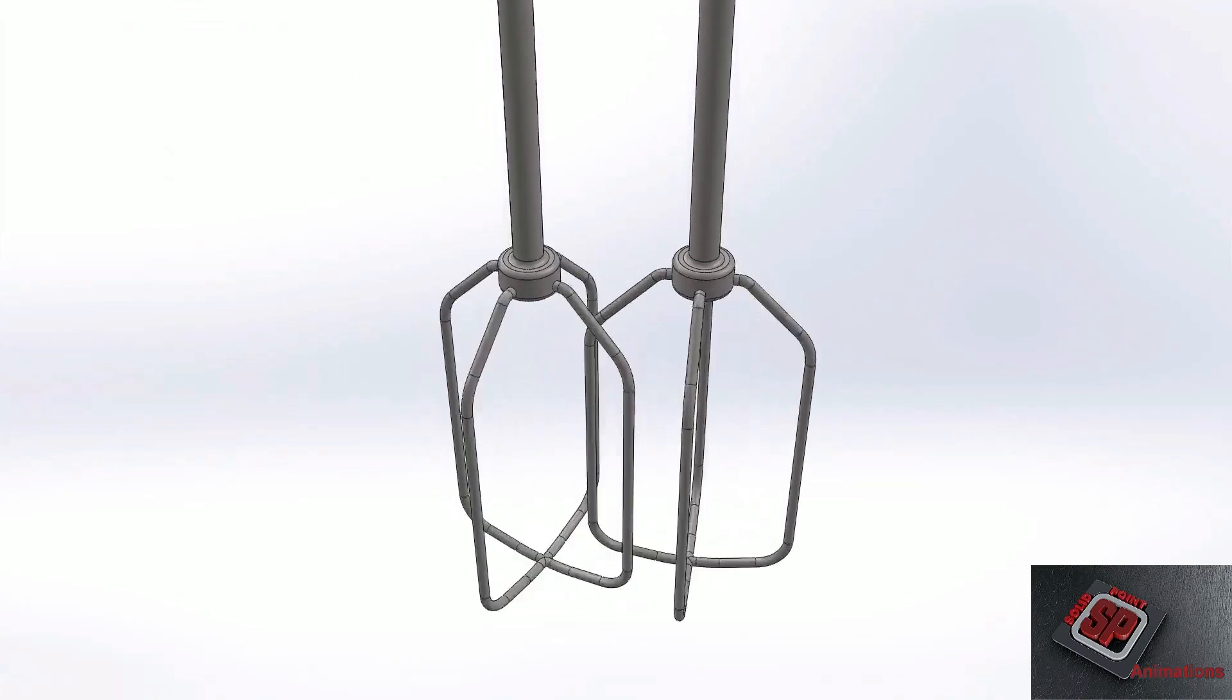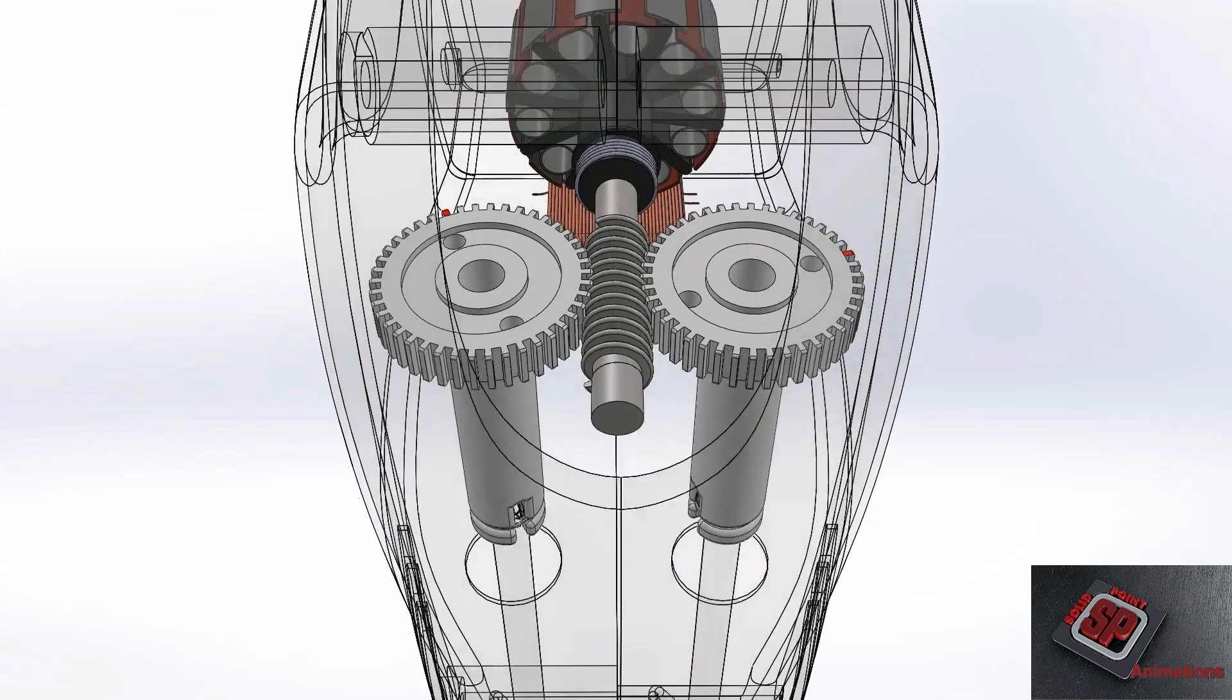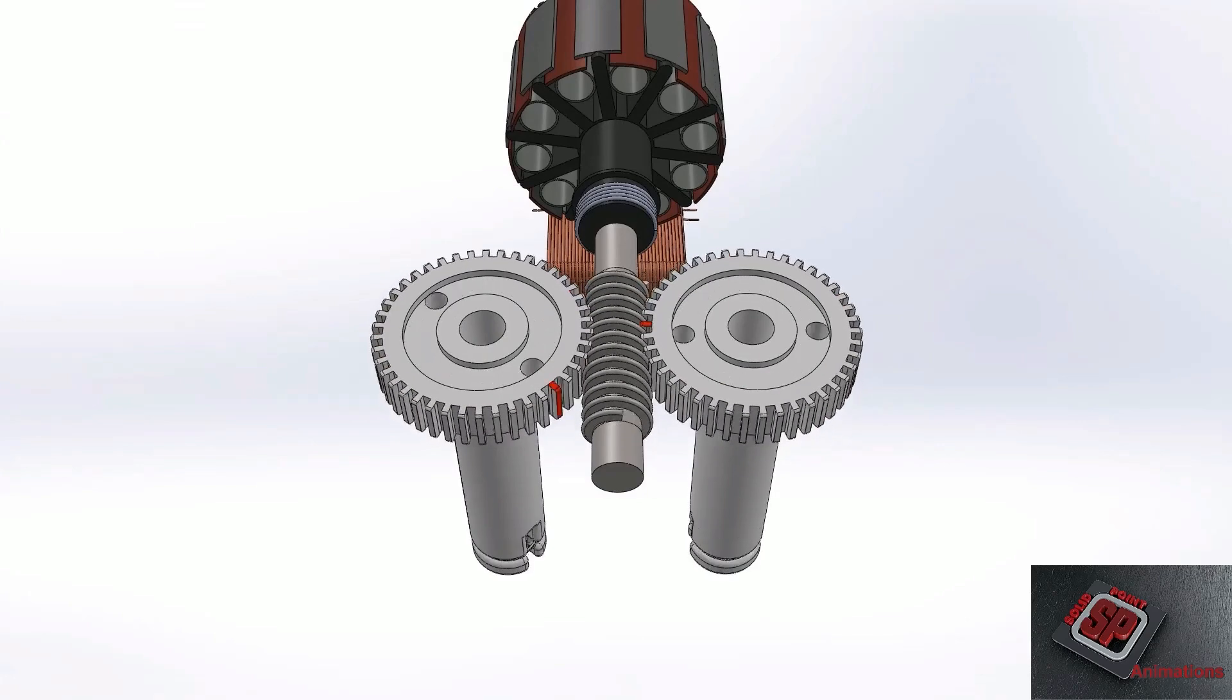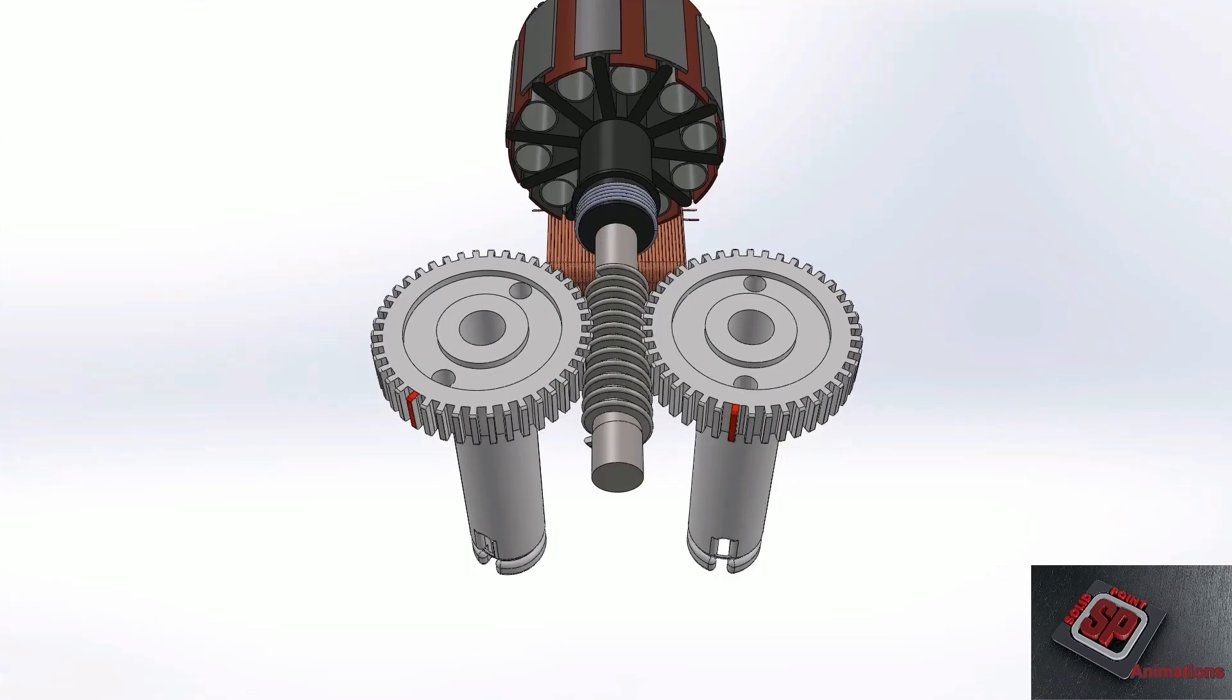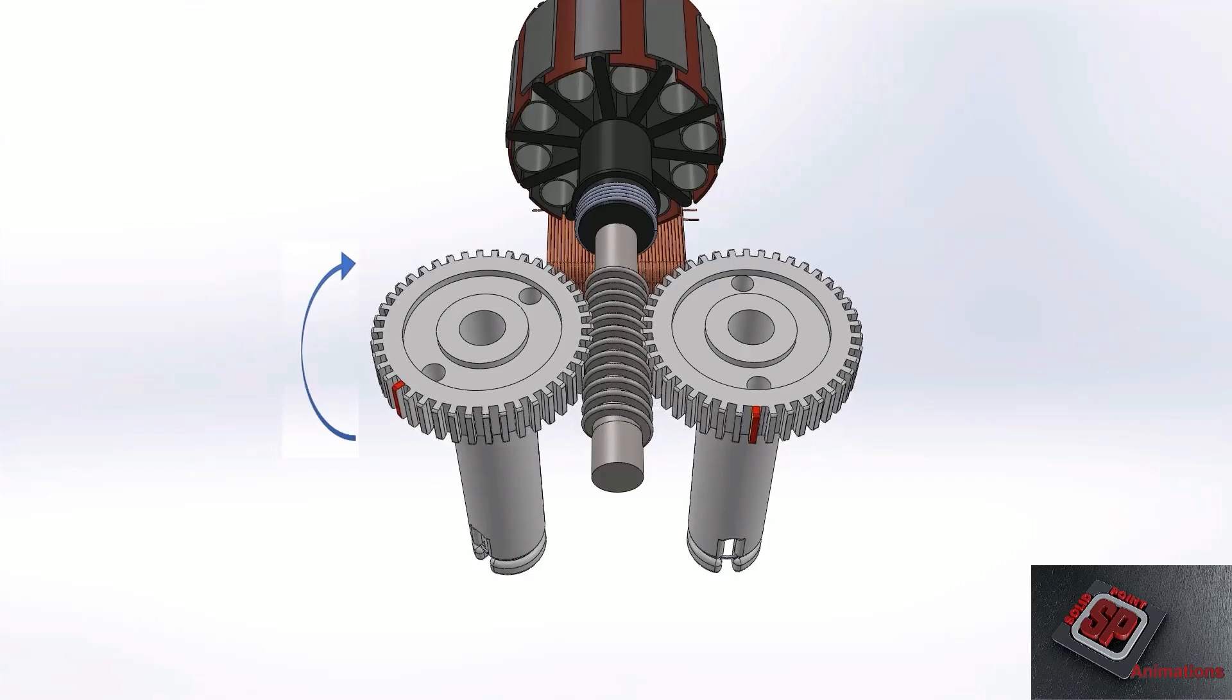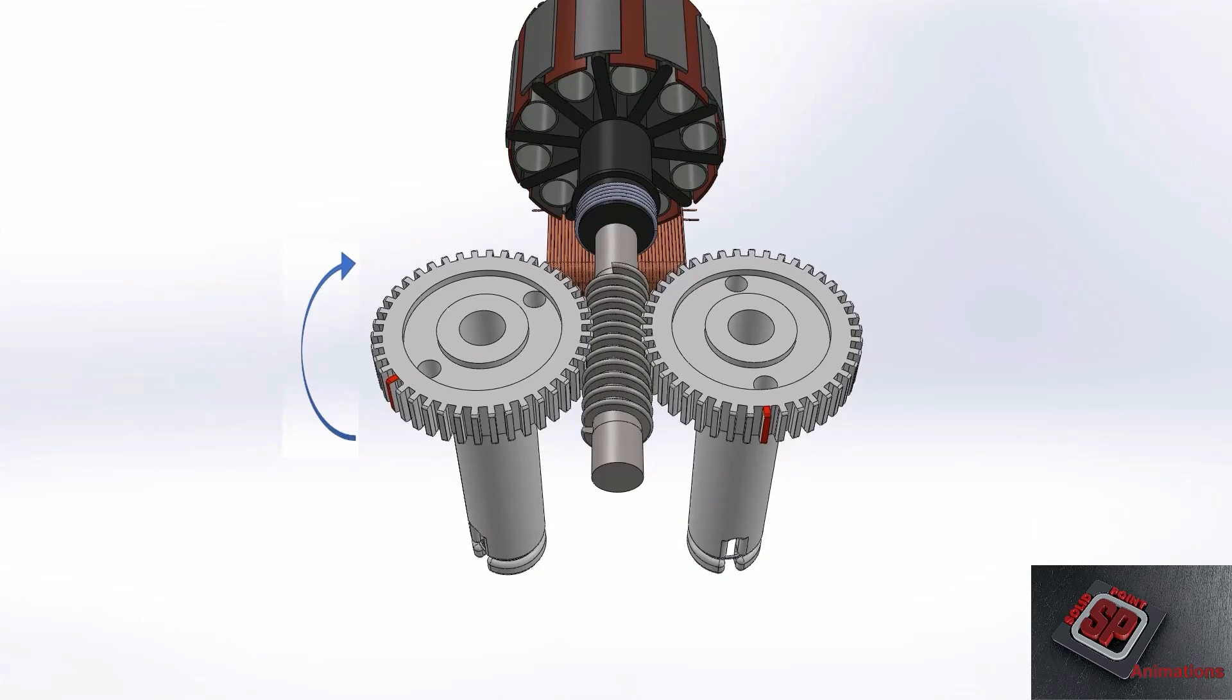The reasons the worm and pinion gear set are used in this application instead of another gear type is because they offer a very compact means of creating a lot of spinning force. The other major benefit to the worm gear is that it is self-locking, meaning when the worm spins, the pinion gears spin with it. But when the pinion gears are spun - say from a toddler who is exploring the world - the worm gear will not spin very far at all. The whole gear mechanism locks up.